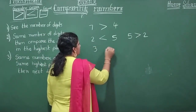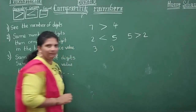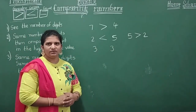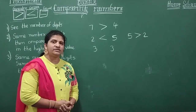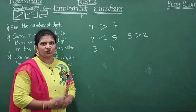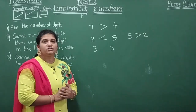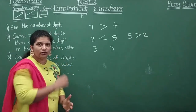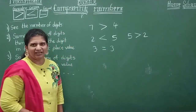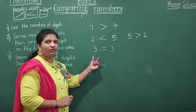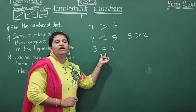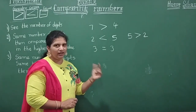Now suppose your mummy has given you and your brother three books each — an equal share. What do you say? 'Hey, I have the same number of books as you!' So at that time, how do you represent it mathematically? You use the equal to symbol: three equal to three. Both are equal.